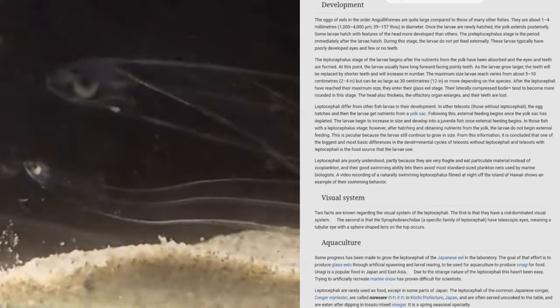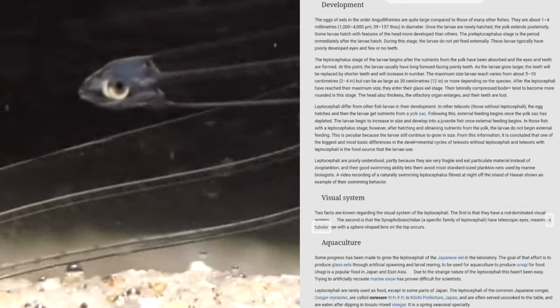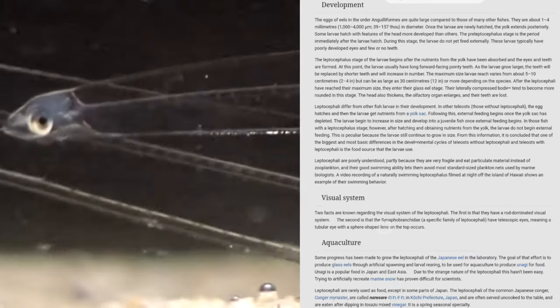Two facts are known regarding the visual system of the leptocephali. The first is that they have a rod-dominated visual system. The second is that the Synaphobranchidae, a specific family of leptocephali, have telescopic eyes, meaning a tubular eye with a sphere-shaped lens on the top occurs.